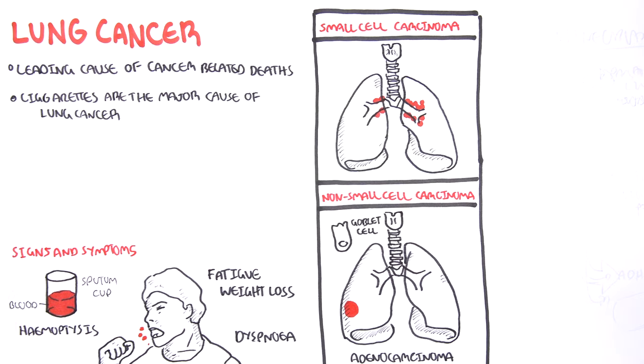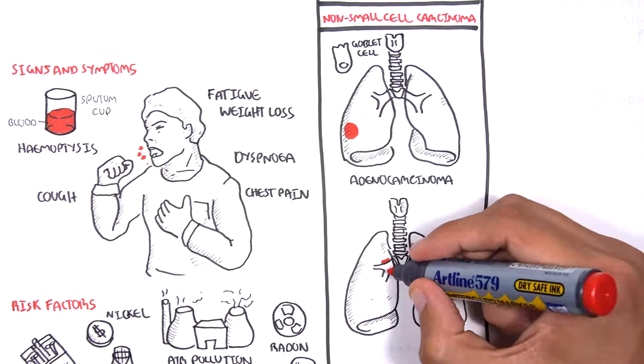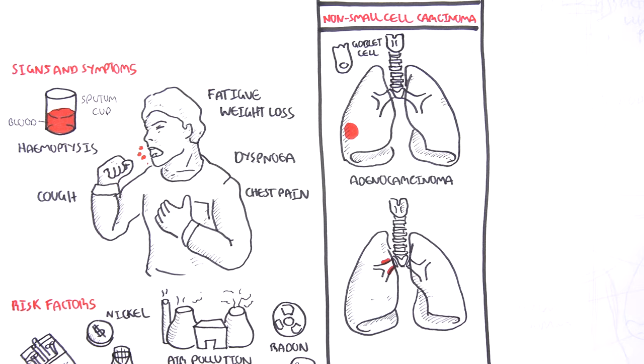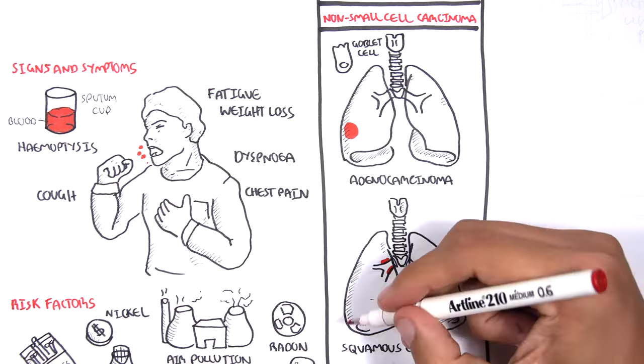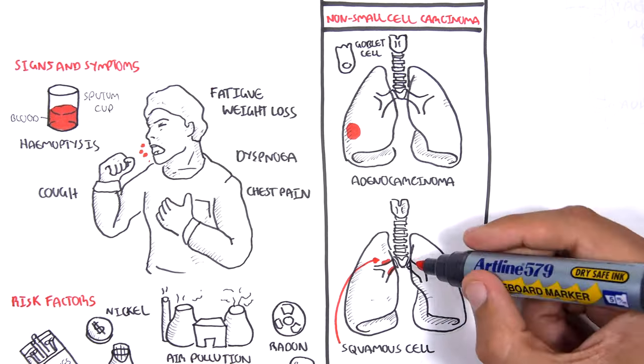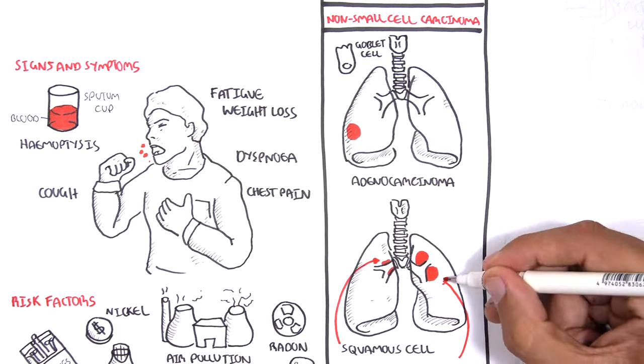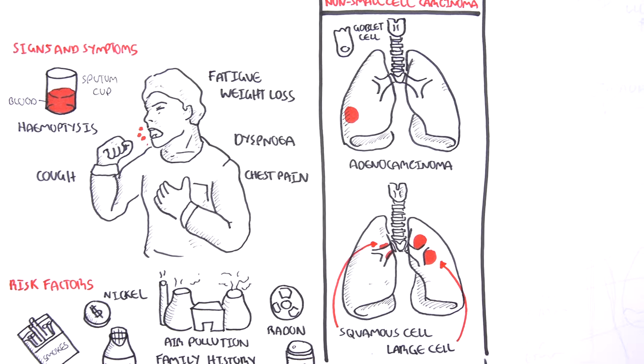The other two types of non-small cell carcinoma are squamous cell carcinoma, which grows in the proximal lung tissue close to the hilum, and then there is also large cell carcinoma, which as the name suggests are large tumors. Large cell carcinoma can grow either proximally or in the peripheral lung tissue.